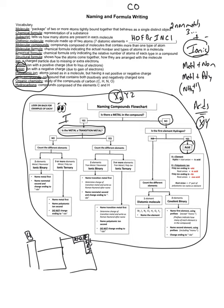If it doesn't begin with an acid, then you have a substance where both elements are nonmetals. If they are both nonmetals, we use prefixes: mono, di, tri, tetra, penta, hexa, hepta, octa, nona, deca. We use these prefixes to indicate how many of each element we have.